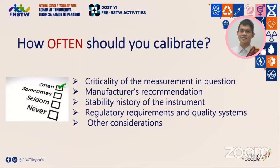There are also regulatory requirements and quality systems. Requirements on calibration vary depending on the industry. For example, the Department of Energy requires petroleum product haulers to have their vehicle tankers calibrated annually. The Consumer Welfare Act states that all instruments for determining weights and measures in consumer transactions shall be tested, calibrated, and sealed every six months by the official sealer — the provincial, city, or municipal treasurer or authorized representative. Other considerations such as frequency of usage and how operators take care of equipment are also things you have to take into account.